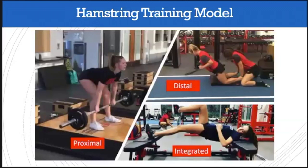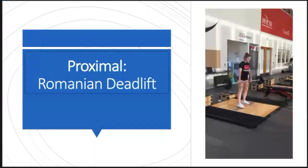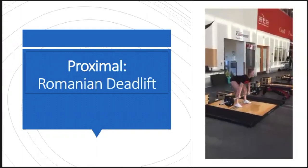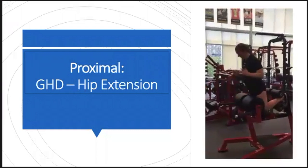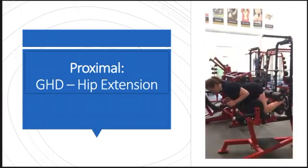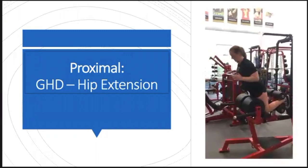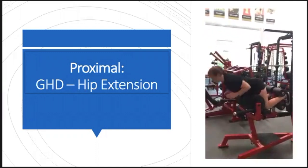So now we'll talk about my hamstring model. I've developed it and broken it down into three distinct categories: proximal, which is hip dominant; distal, which is knee dominant; and integrated, which is a combination of the hip and the knee. For the proximal, we have the Romanian deadlift — a very hip dominant exercise. Then we move to a GHD hip extension, where we add load — holding dumbbells, a barbell on their back, or a plate to their chest — and progressively overload this hip pattern.